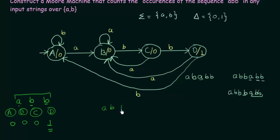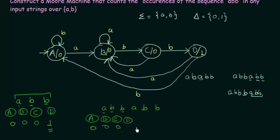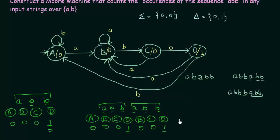Now let's take the string ABBABB, where ABB occurs two times. We start with state A, output 0. On 'a', A goes to B, printing 0. On 'b', it goes to C, printing 0. On 'b', it goes to D, printing 1. Then in state D, we get 'a', so D goes to B, printing 0. On 'b', B goes to C, printing 0. On 'b', C goes to D, printing 1. So the output is 0, 0, 0, 1, 0, 0, 1. There are two 1s, because the sequence ABB, ABB was encountered two times.